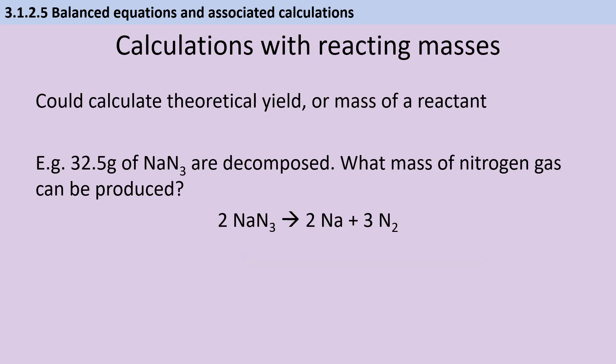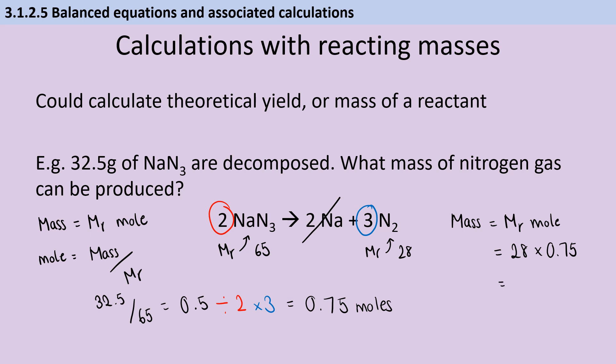Start answering a theoretical yield question by doing your housekeeping and removing anything that's not part of the question, and then writing down the Mr of the other substances. Use mass = Mr × mole to work out what the number of moles is of the substance that you do have the mass for. So here I'm going to find that I have 0.5 moles of sodium azide. Then I need to look at the coefficients to work out how many moles I have of the second substance, and this is probably the most common thing that students leave out when they're doing these calculations. You divide by the coefficient of the thing you already know about and multiply by the coefficient of the thing you're trying to work out. So I've got 0.75 moles of nitrogen. I then go back to mass = Mr × mole to work out that I've got 21 grams.